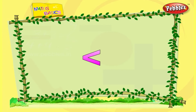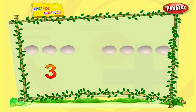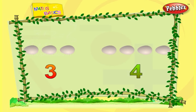One, two, three, four — there are three eggs. One, two, three, four — there are four eggs. Three is lesser when compared to four. Number three is less than number four.